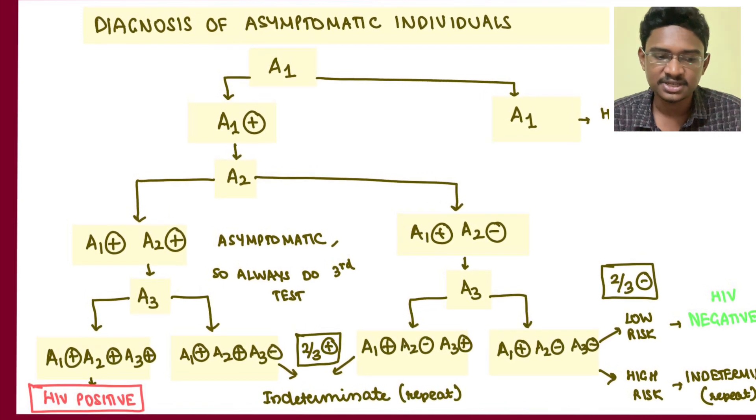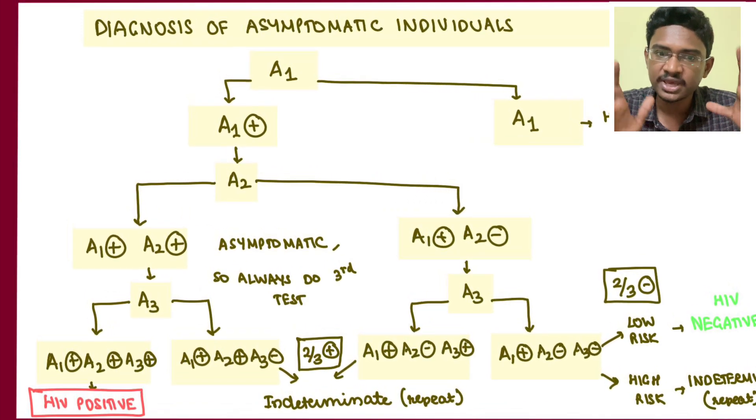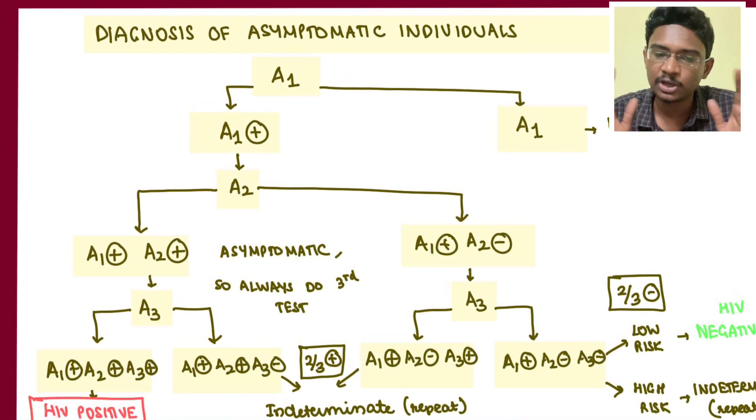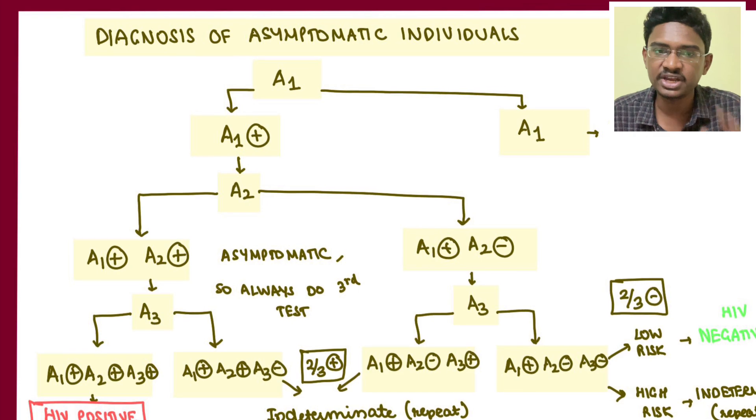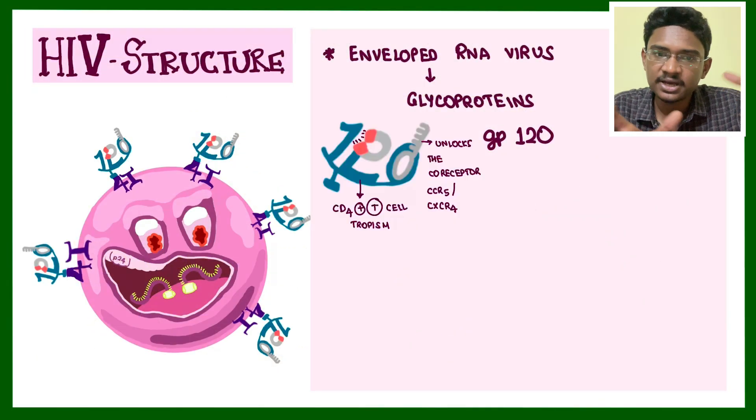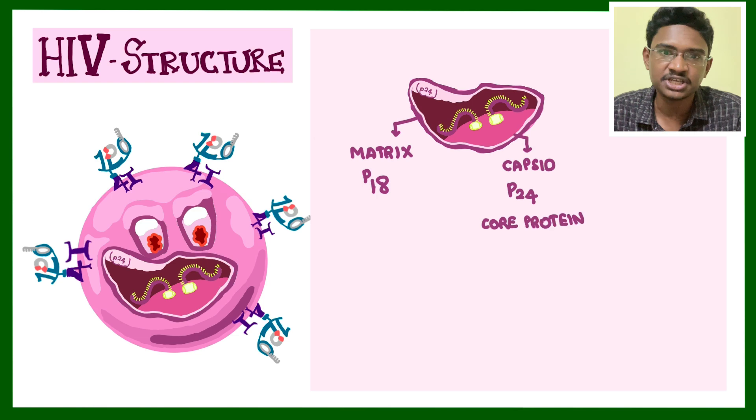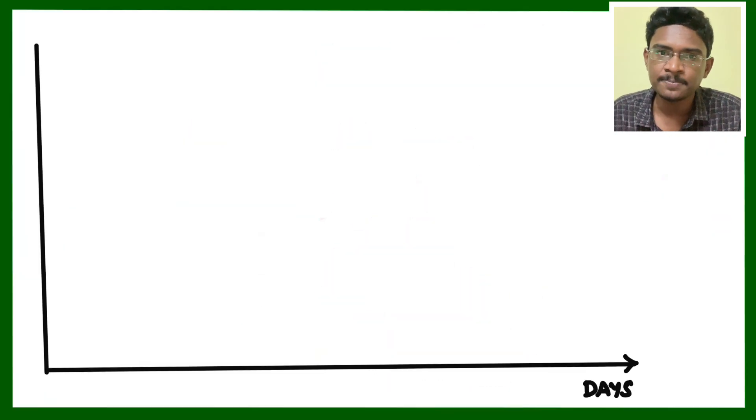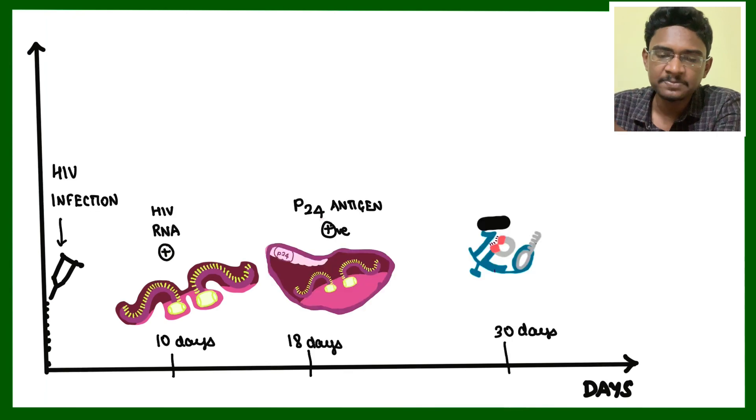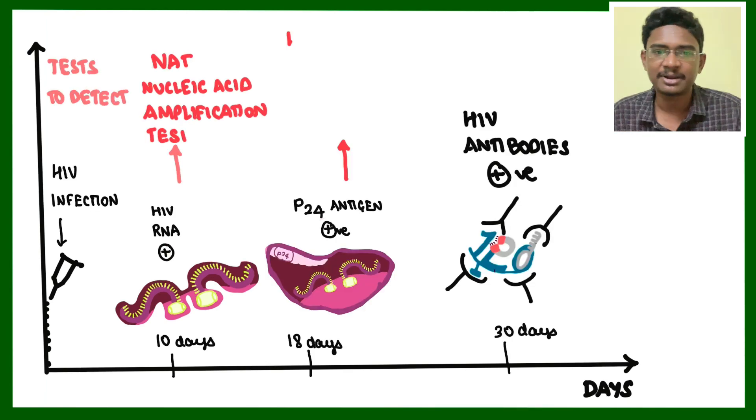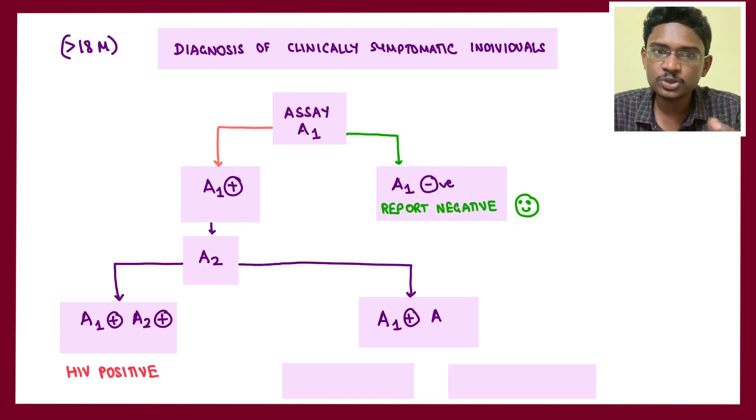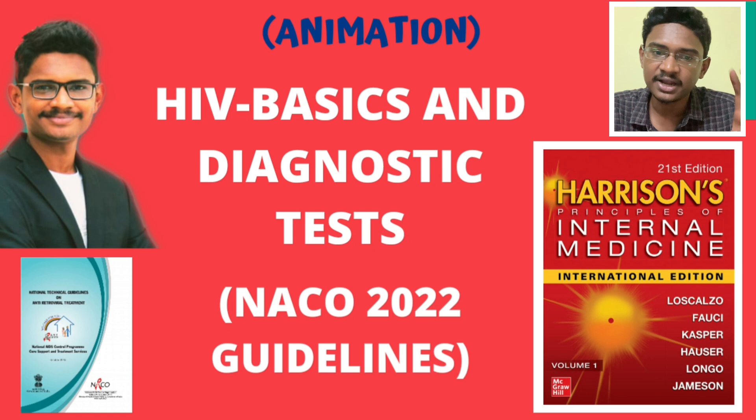This is the algorithm given by NACO 2022. We understood the structure of HIV in this session, how to diagnose HIV, tests used in diagnosis, and steps in symptomatic and asymptomatic individuals. We will be following with a series of videos on HIV topic to make it very simple and in animated fashion. Thank you.